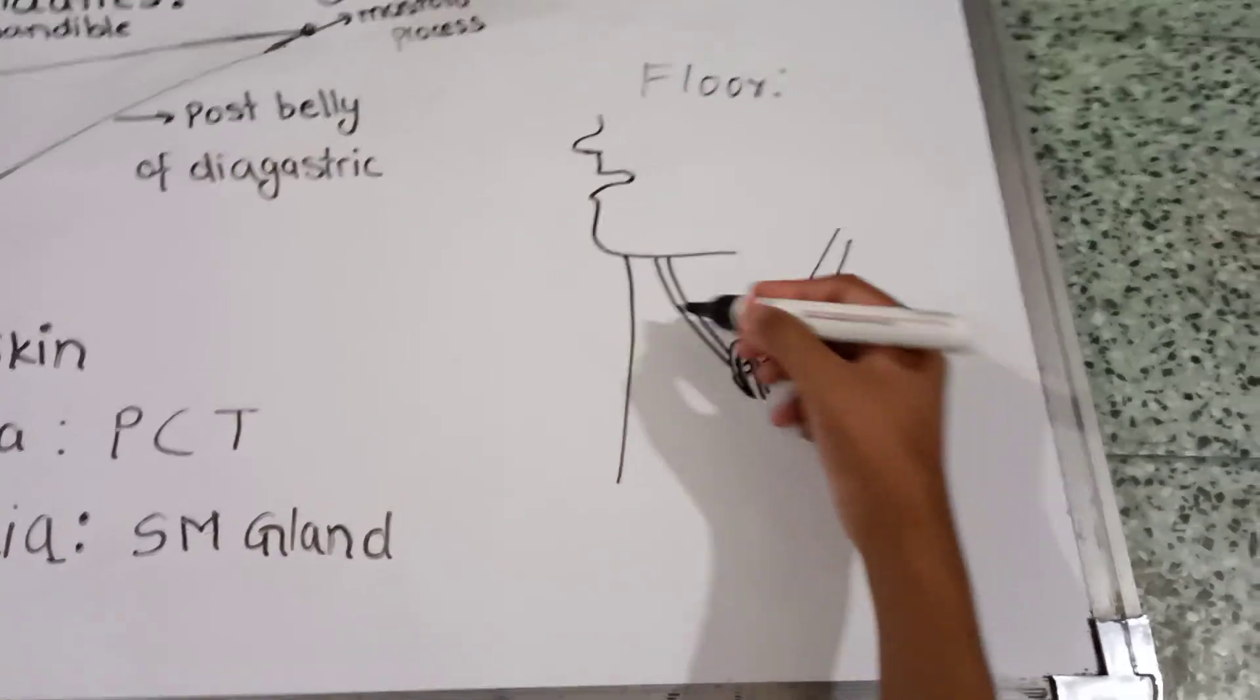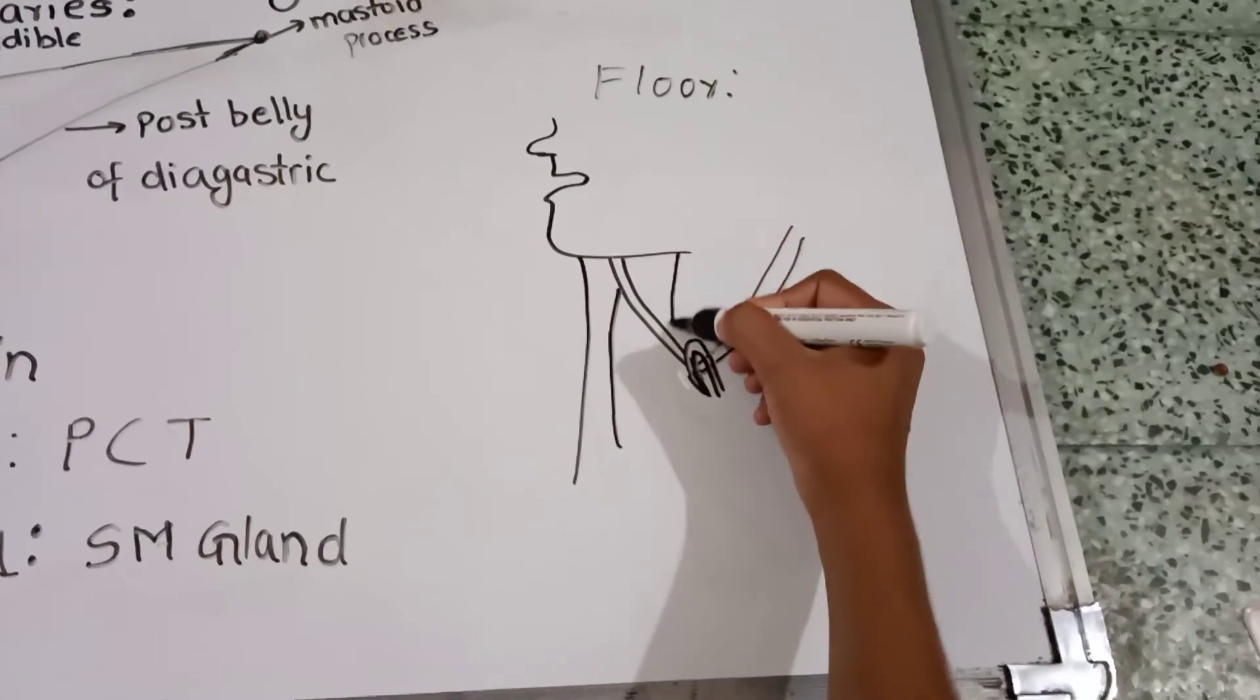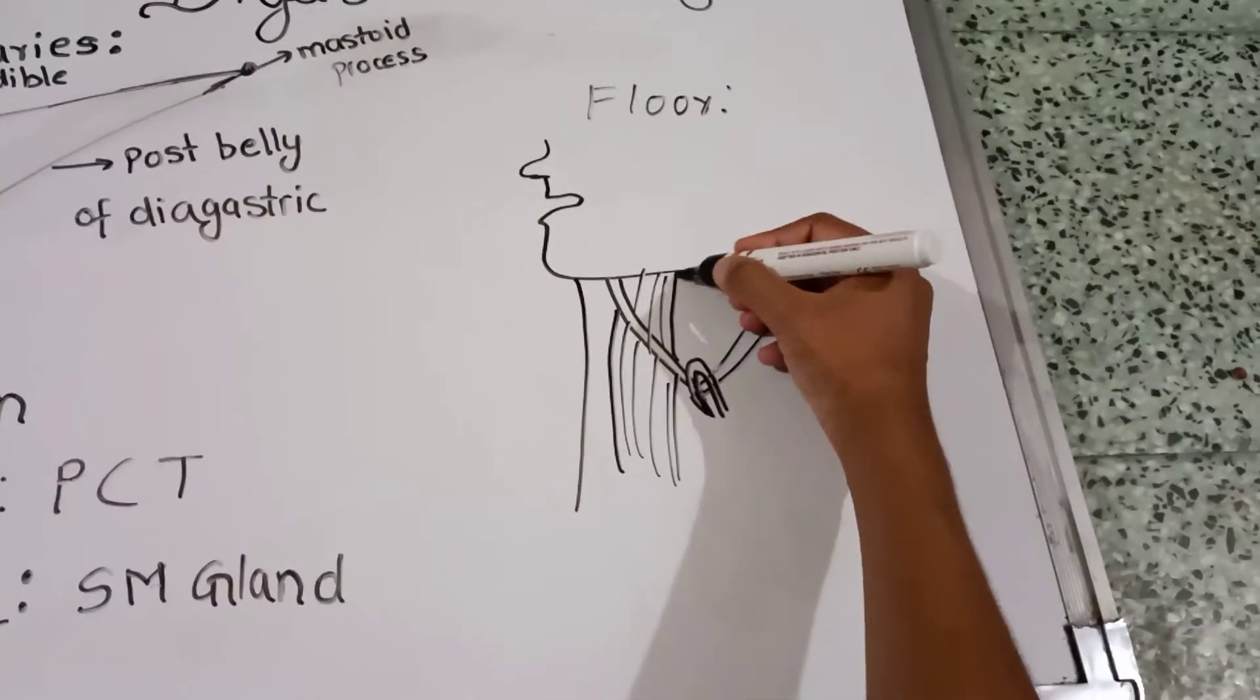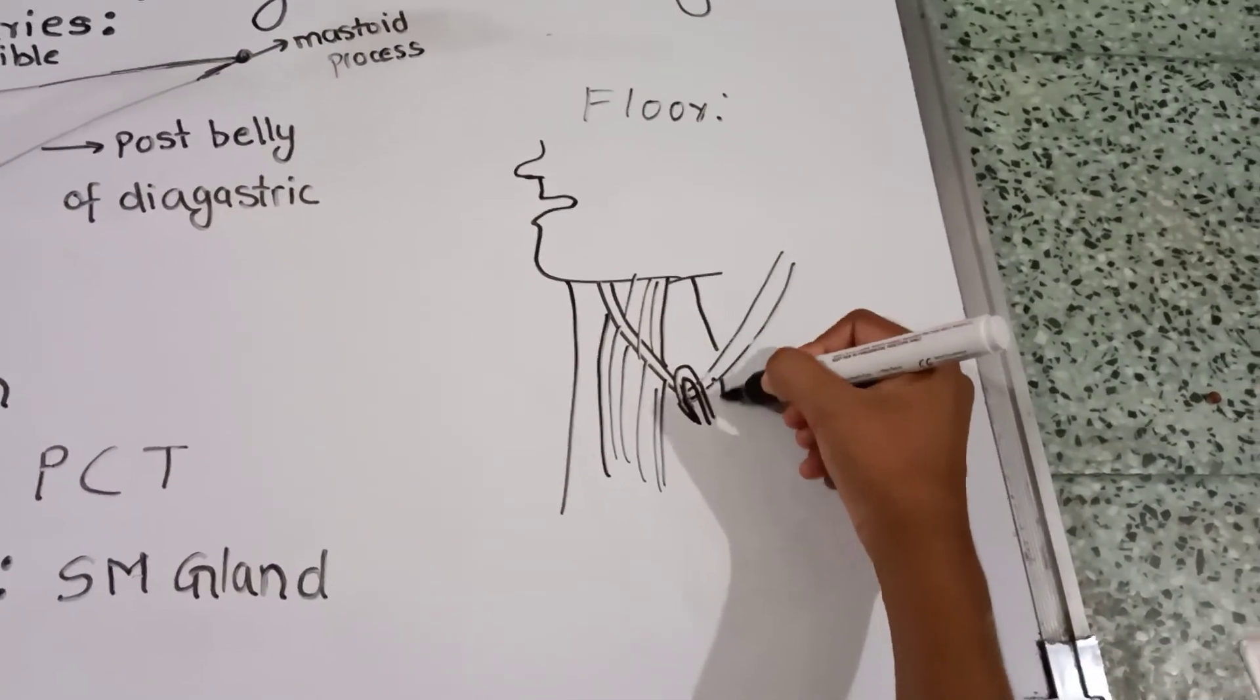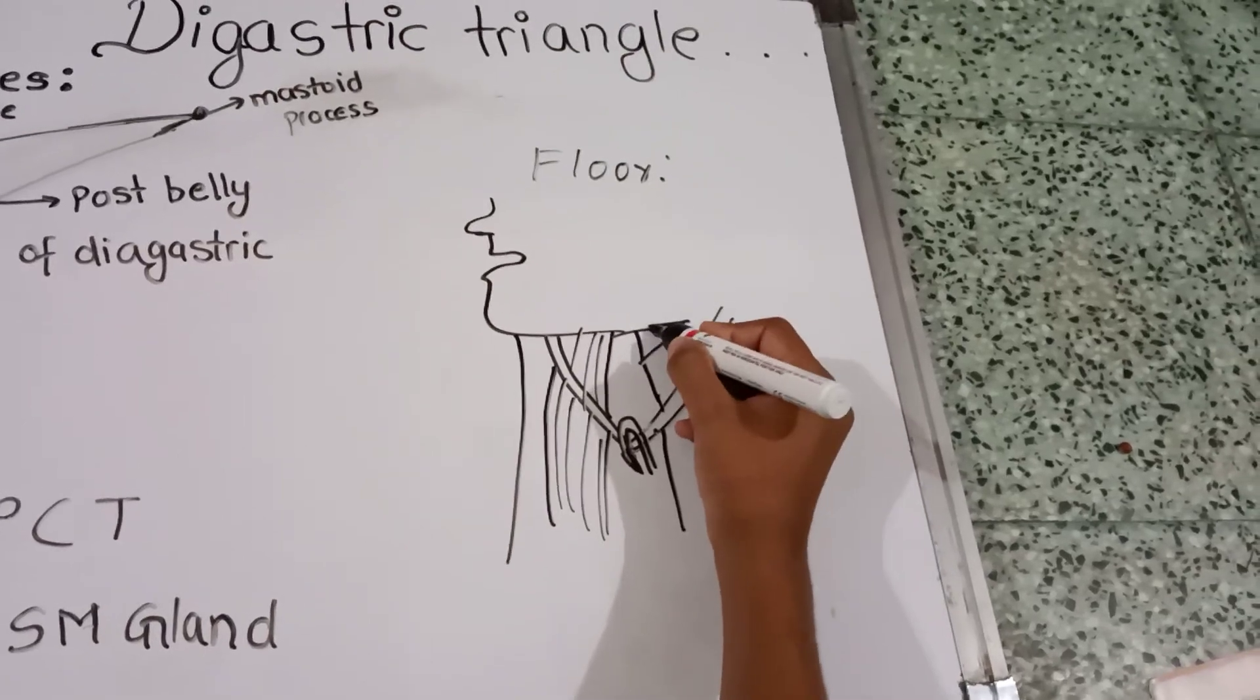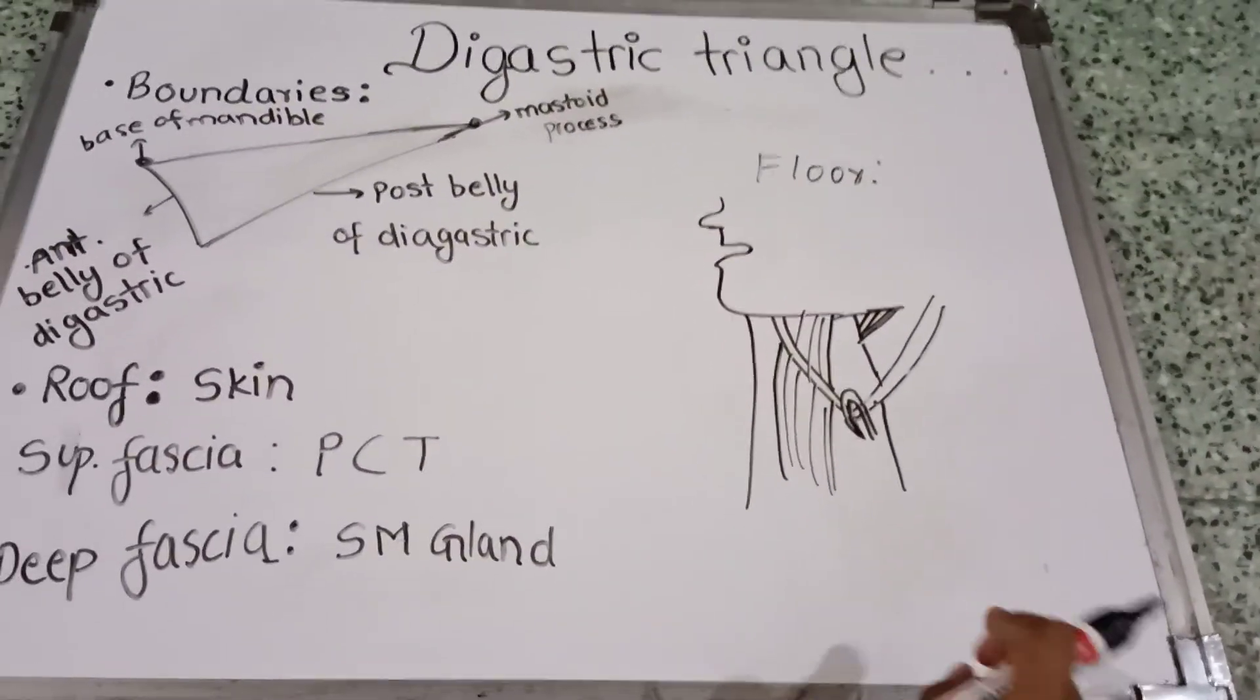Anteriorly, it is formed by the mylohyoid muscle. Posteriorly, by the hyoglossus muscle and a small part of the middle constrictor of the pharynx. This is all about the digastric triangle.